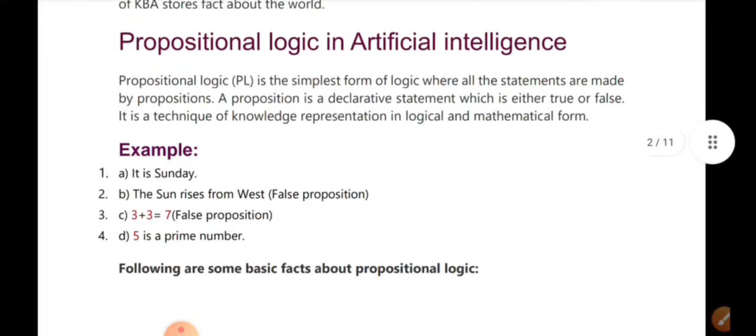Here is an example. 'It is Sunday' — that is a proposition. 'The sun rises from the west' — that is false, because the sun rises from the east. That is a false proposition. '5 is a prime number' — that is true. These are examples of propositional logic.